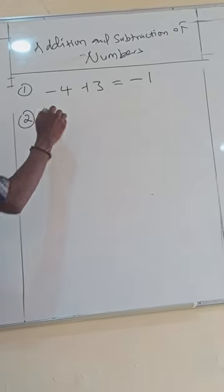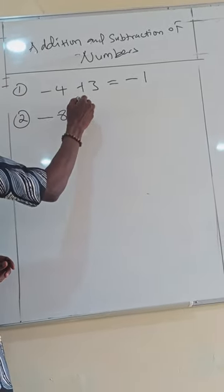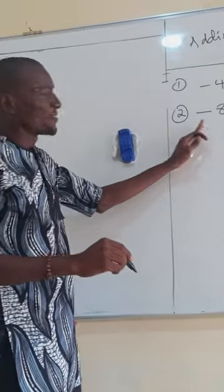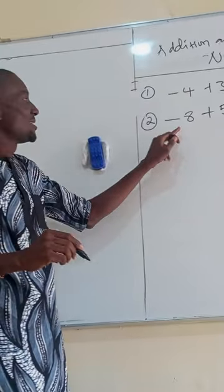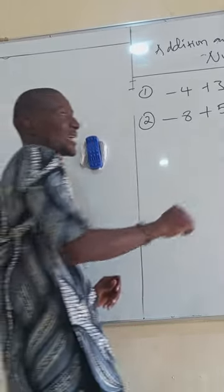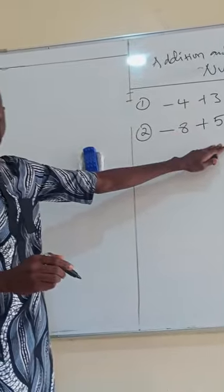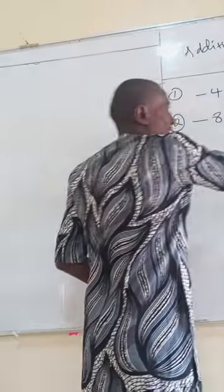Number 2, when you have minus 8 plus 5, you check again - which of the signs is having the highest number? Is what? Minus. Your answer will be minus. You find the difference between 8 and 5. 8 minus 5 is what? 3.